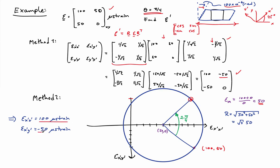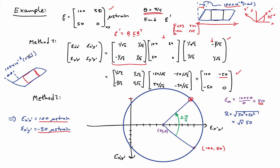When I draw an element of material and show what it looks like after deformation, it has some extension in the X prime direction, but the angle between the X prime and Y prime directions is increasing. This angle is represented by the tensorial shear strain, and multiplying by 2 gives the engineering shear strain — 100 times 10 to the minus 6 radians. Notice that I have an opening of the angle: starting with 90 degrees, I end up with a larger angle by 100 times 10 to the minus 6 radians.